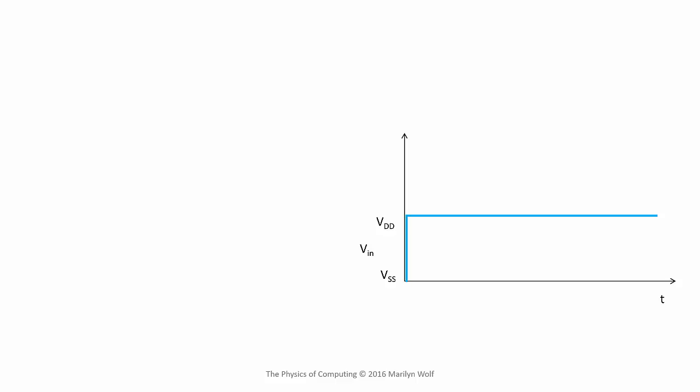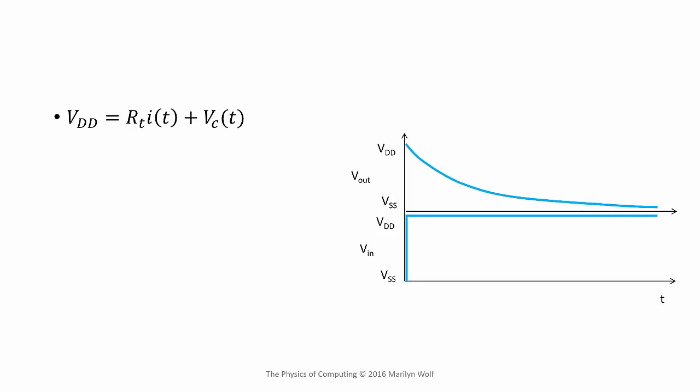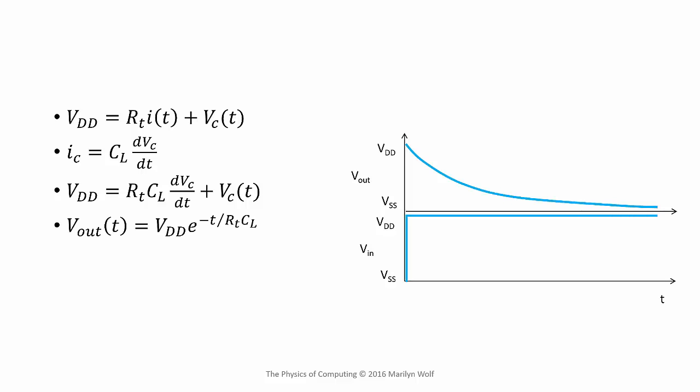We'll give the inverter a step input and turn on the pull-down transistor. This will cause the pull-down resistor to discharge the load capacitance and decrease the output voltage over time. We can write equations to analyze this waveform: the voltage across the power supply is the sum of the transistor resistance times the current plus the capacitor voltage. Using the capacitor law for current and integrating, we find the output voltage as a function of time is an exponential. Time is divided by the product of the transistor resistance and the load capacitance — we call that product the time constant.